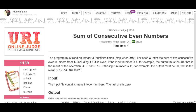Problem number 1159 is about the sum of consecutive even numbers. The problem involves odd numbers as well, but we are working with even numbers. We need to take a number as input and find the sum.